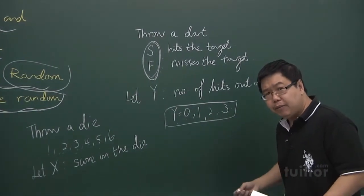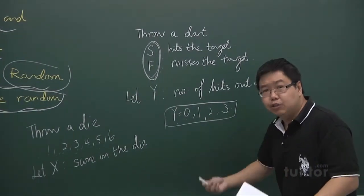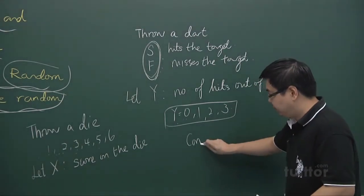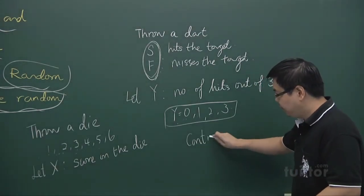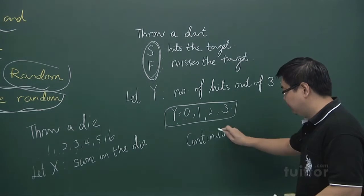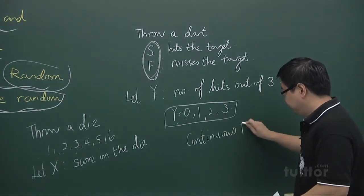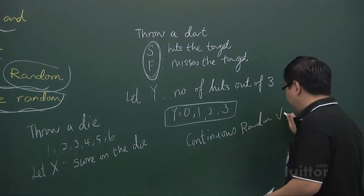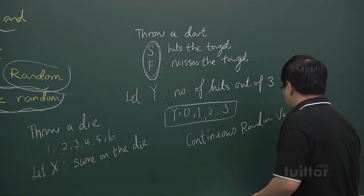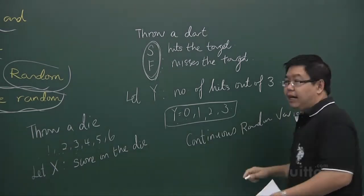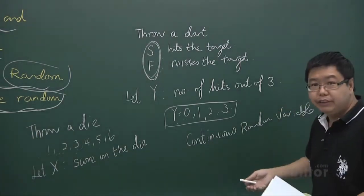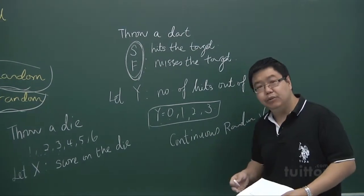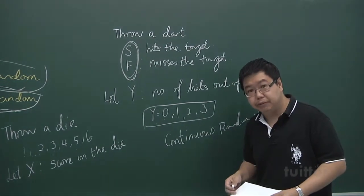But what about random variables that are not discrete? We call them continuous random variables, which we will be doing in the next chapter. Examples of continuous random variables would be the height of individuals and the weight of individuals.